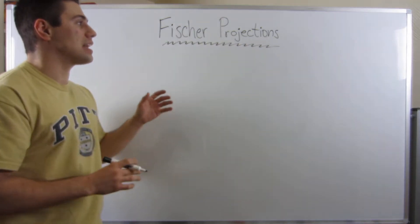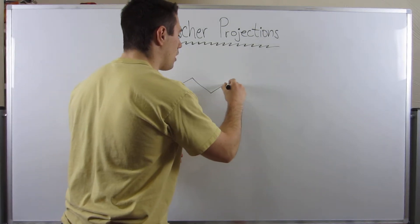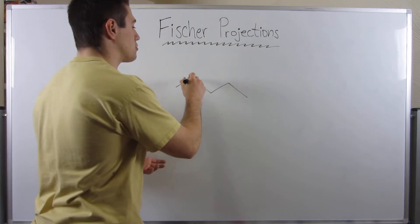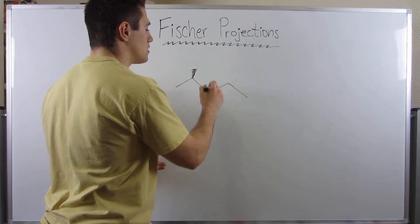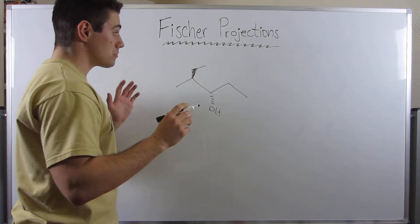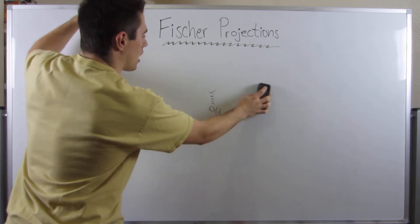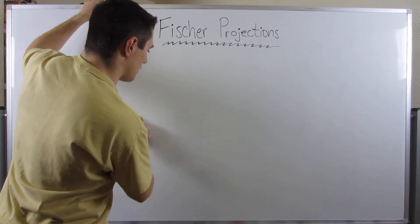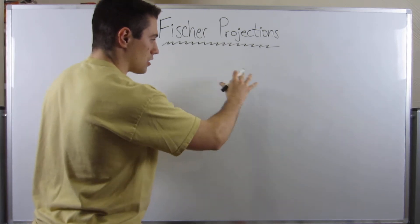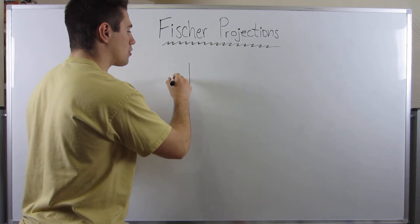Just think of Fischer Projections as a different way to look at structures. We're used to seeing the bond-line structures we've been drawing, and now that we've been doing some Stereochemistry, there's some wedges and dashes with certain groups on them. Fischer Projections kind of change up the game a little bit. Instead of having that zigzaggy, across, up and down type deal, we just draw a cross.